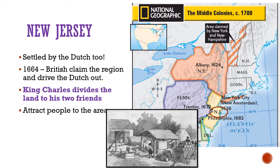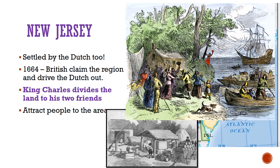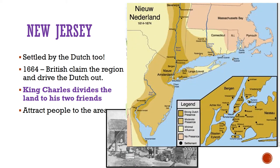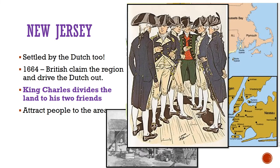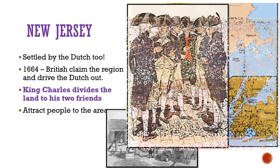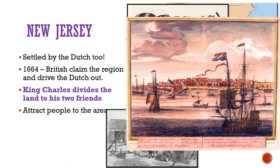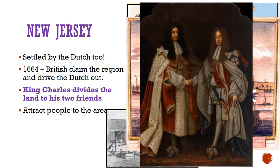New Jersey's early colonial history is similar to New York's. Like New York, the area was first colonized by Dutch settlers around 1613. The colony was called New Netherland and included parts of modern-day New York and New Jersey. By 1664, the British had claimed the entire region and driven the Dutch out. New Netherland was renamed New Jersey and New Amsterdam was renamed New York. King Charles originally gave the region to his brother, the Duke of York.